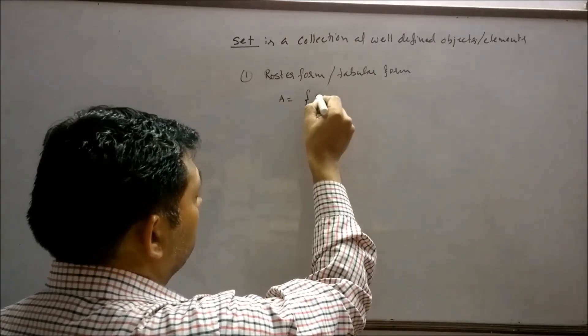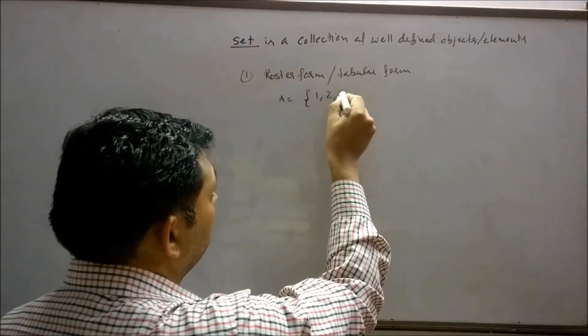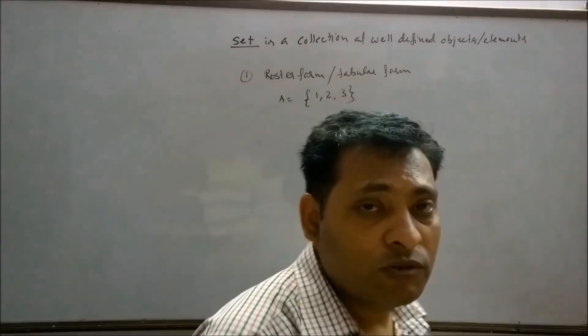A is first three natural numbers: 1, 2, 3. This is a Roaster form.